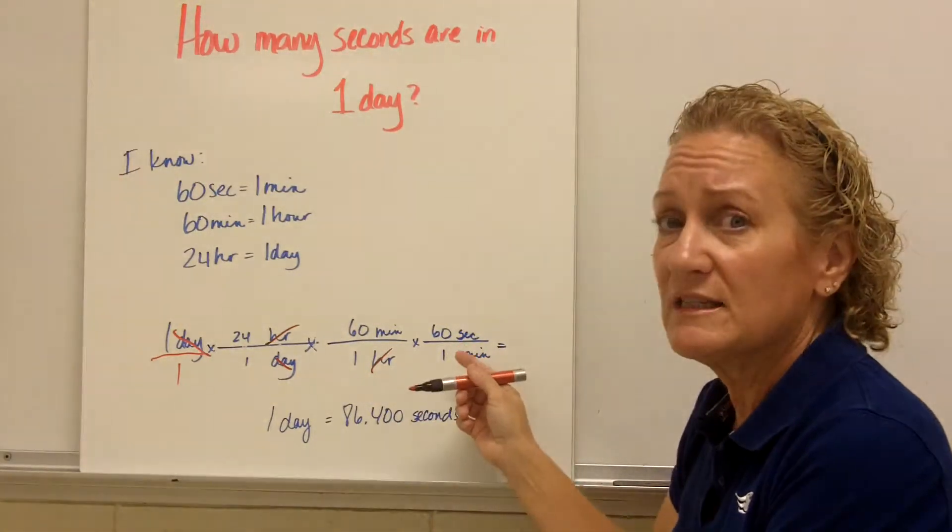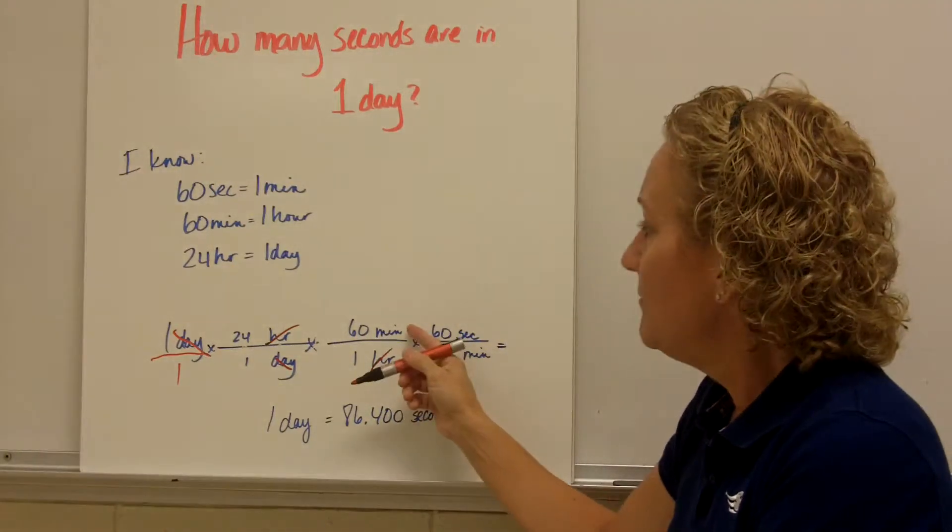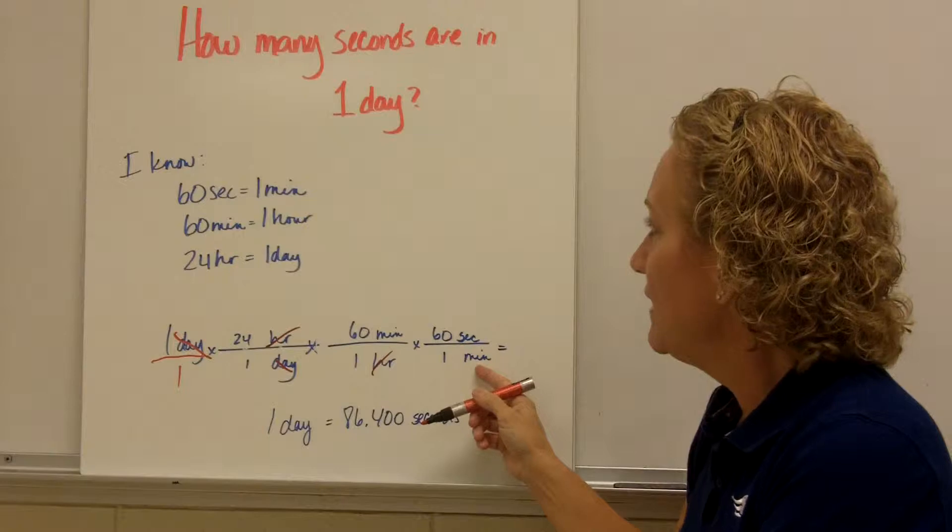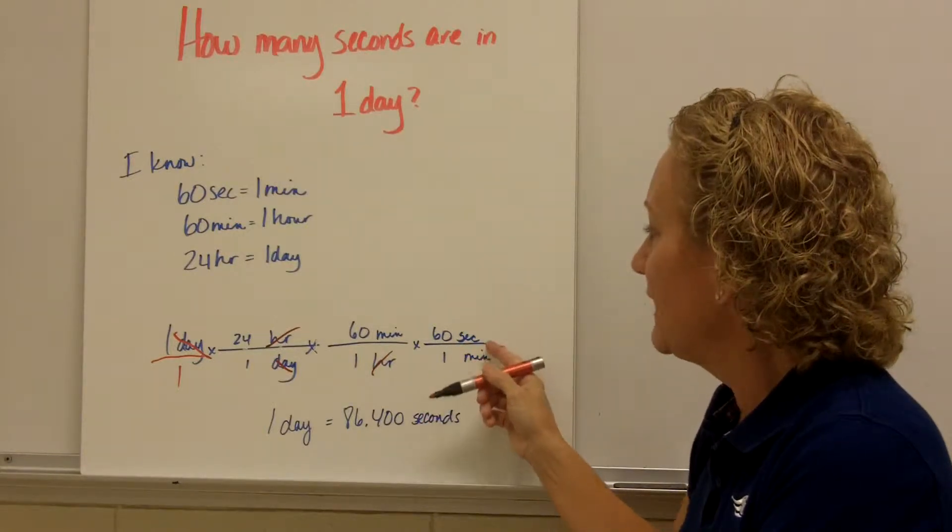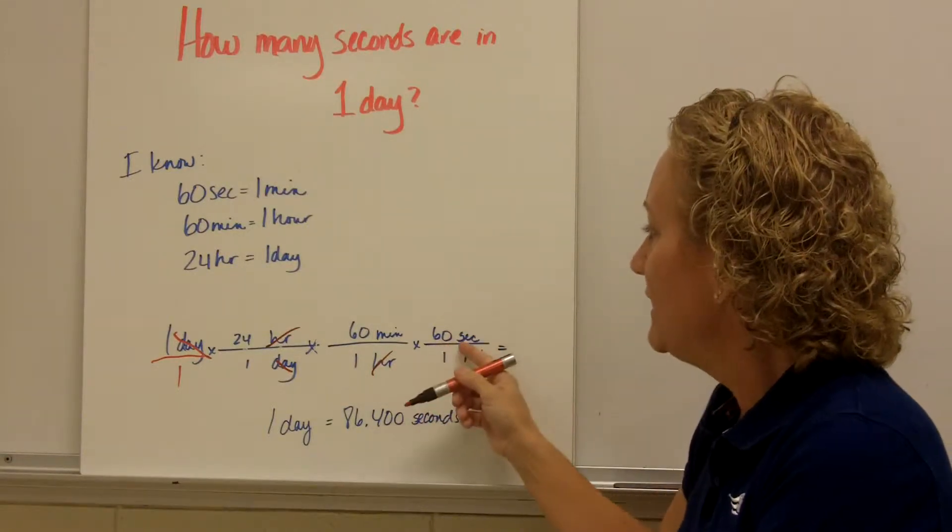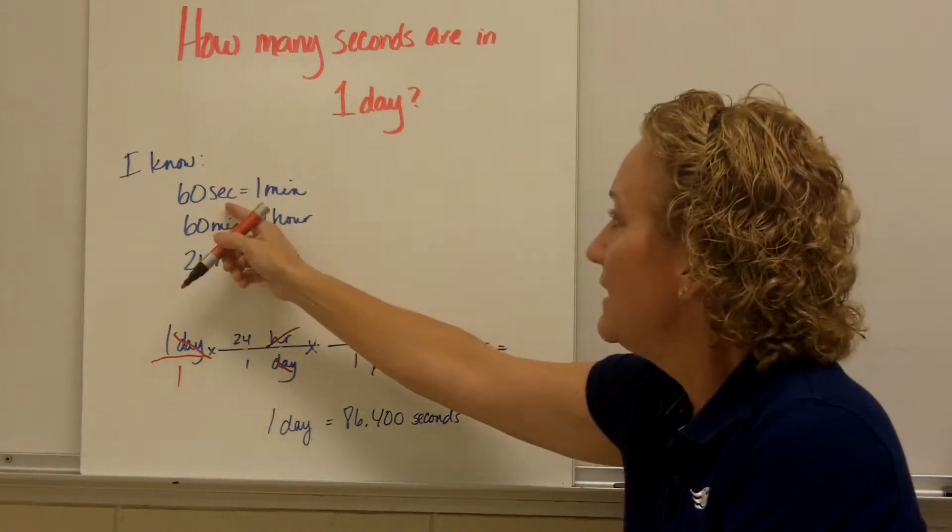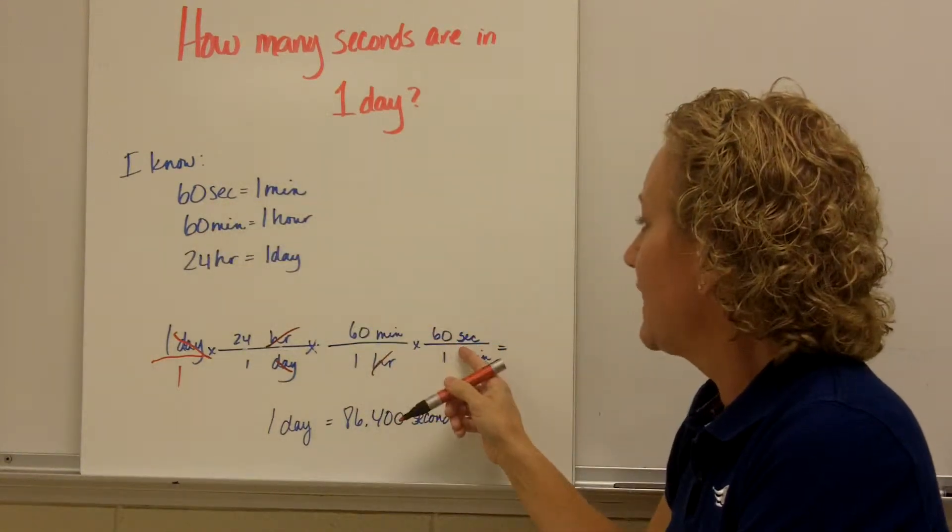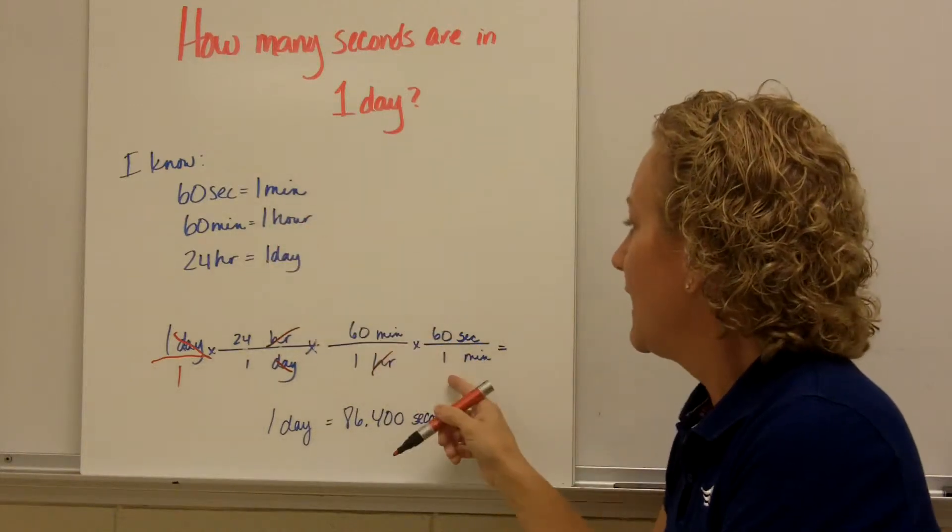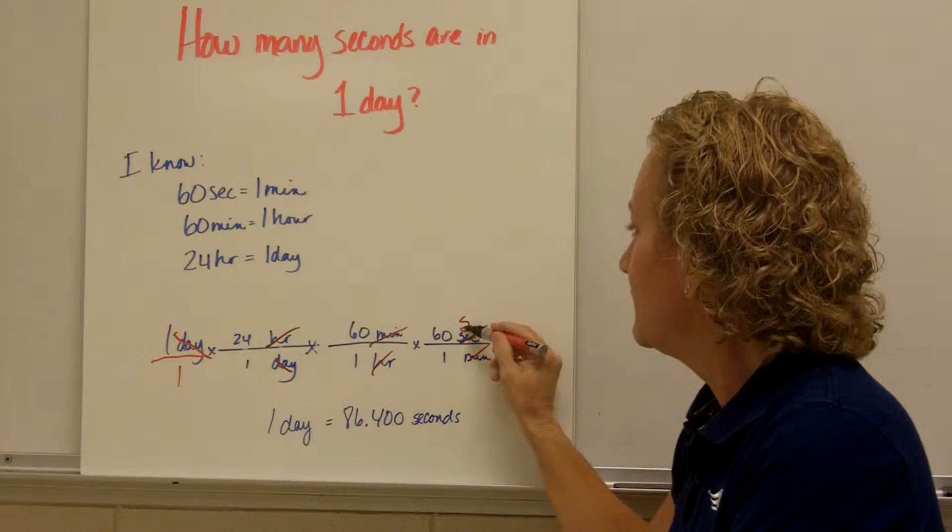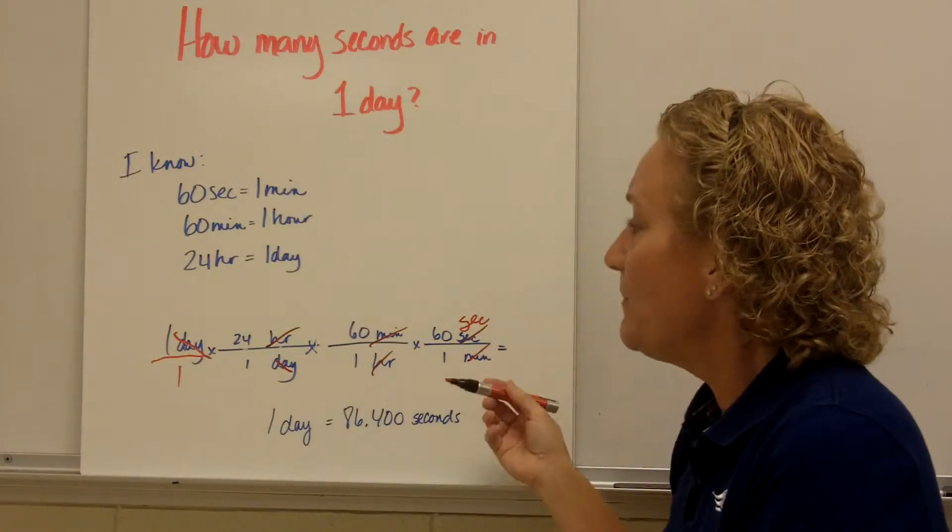So I need to do one more conversion. I need to convert from minutes to seconds. You guessed it. Minutes is in the numerator, so I'm going to put it in the denominator. My conversion from minutes to seconds, this is equivalent to one. 60 seconds is one minute. So I put the 60 next to the word seconds and one next to the word minutes. And basically I'm done.